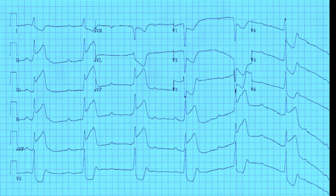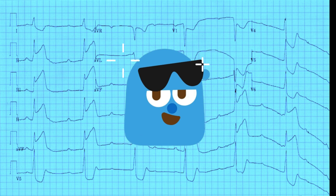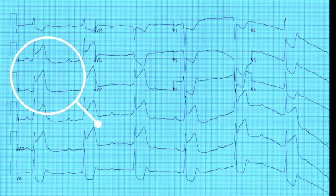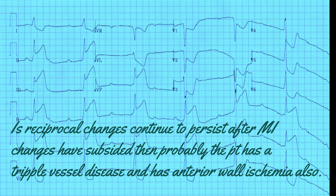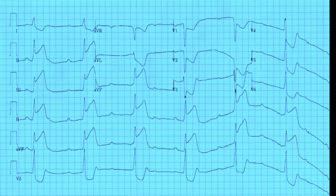If there is elevation in inferior leads with tall R waves, there will be corresponding deep S waves in the lateral leads — and vice versa. In inferior MI you will see ST elevation in leads II, III, and aVF with reciprocal changes — this is the classical pattern of inferior wall MI. If after two or three days of MI, V1 to V6 still show ST depression, you have to consider downsloping ST depression due to anterior wall ischemia as well. Reciprocal changes will revert if there is no anterior ischemia, but if both inferior MI and anterior wall ischemia persist, that signifies triple vessel disease.